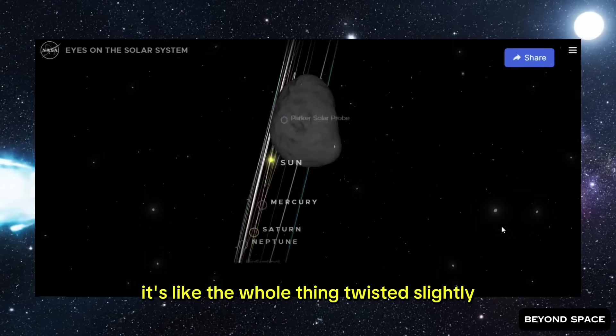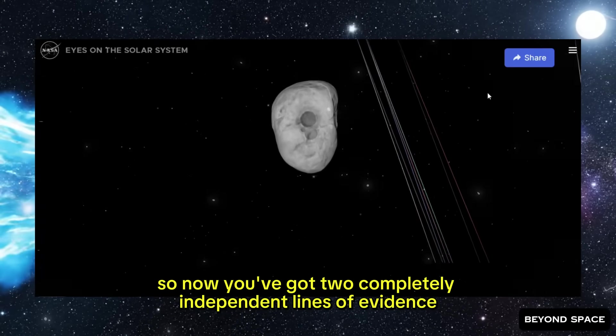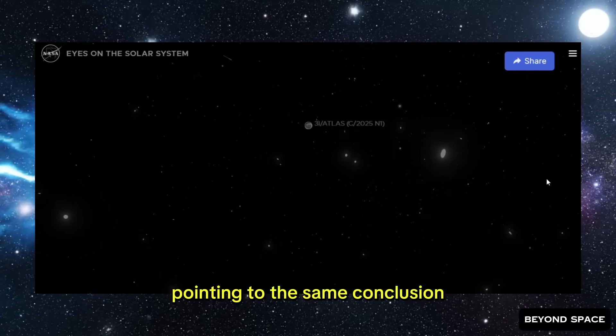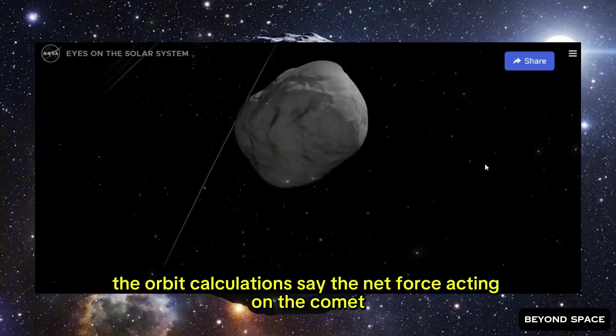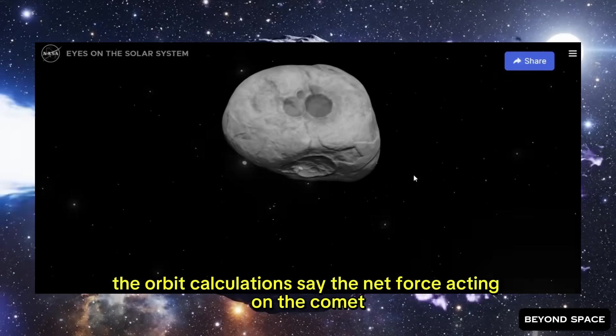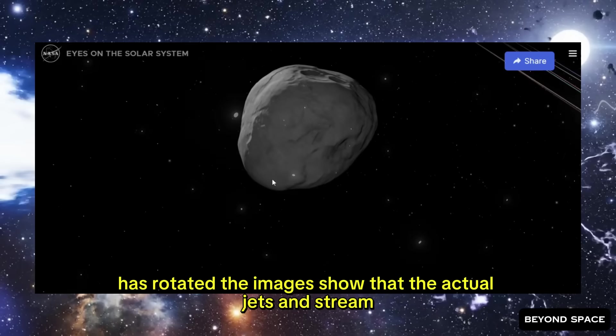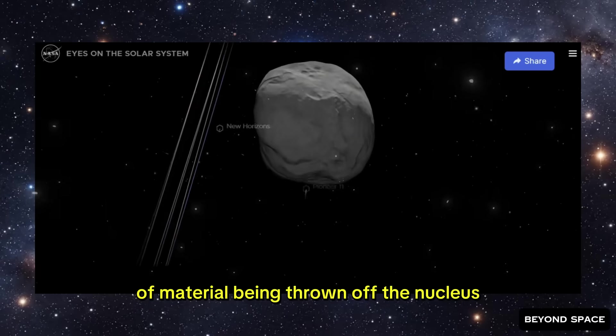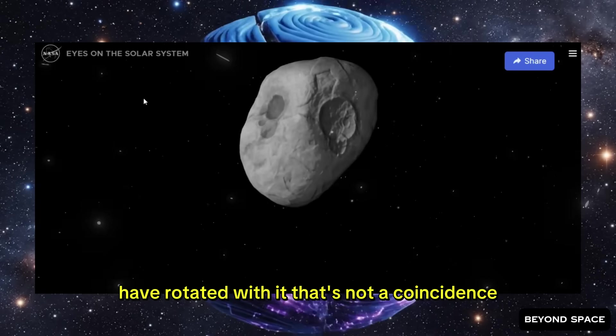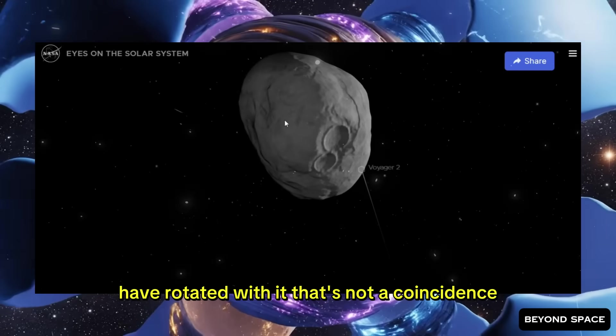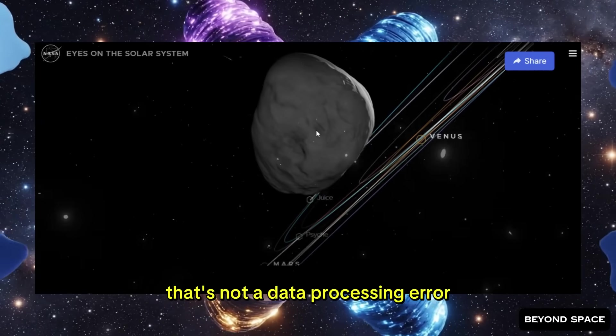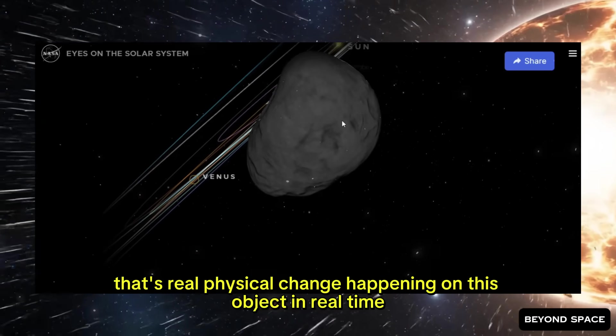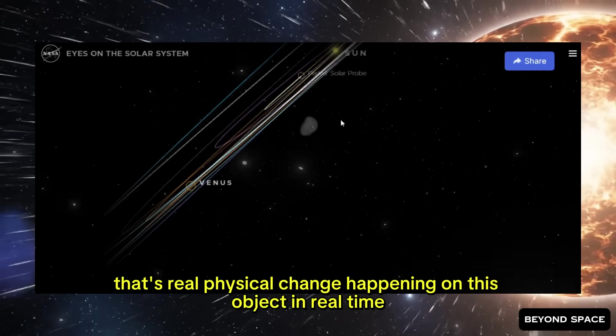So now you've got two completely independent lines of evidence pointing to the same conclusion. The orbit calculations say the net force acting on the comet has rotated. The images show that the actual jets and streams of material being thrown off the nucleus have rotated with it. That's not a coincidence. That's not a data processing error. That's real physical change happening on this object in real time.